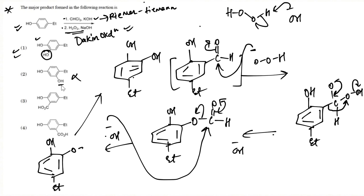The answer is option number one — the OH group is close to the first OH, not the ethyl group. There is no COOH group, so options three and four are incorrect. Option two is also incorrect because the incoming OH is going to be close to the first OH group, which was para to ethyl.